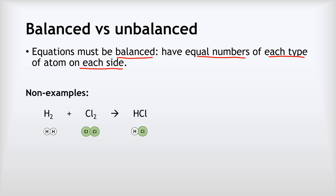If we look at this example, this is how we make HCl, which is hydrogen chloride. We make it from H₂ hydrogen gas and Cl₂ chlorine gas. We've got two hydrogens and two chlorines on the left, but only one hydrogen and one chlorine on the right. So mass is not conserved — this equation is unbalanced, which means it's wrong.